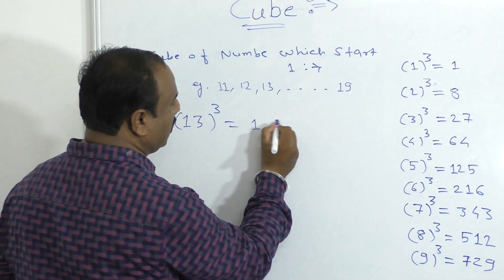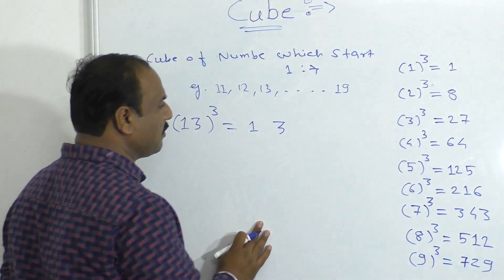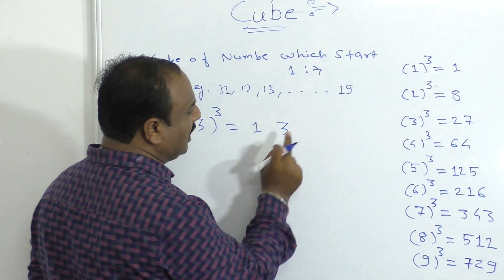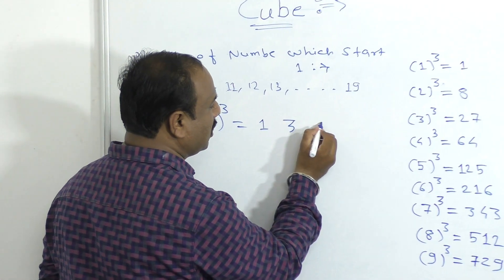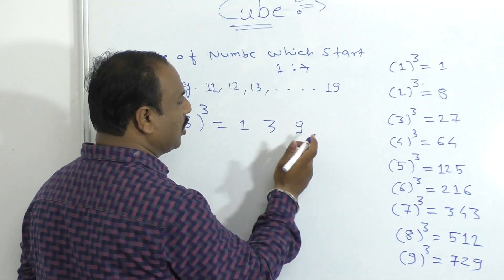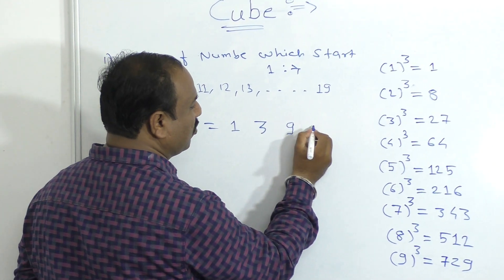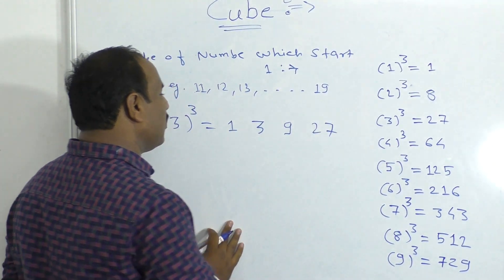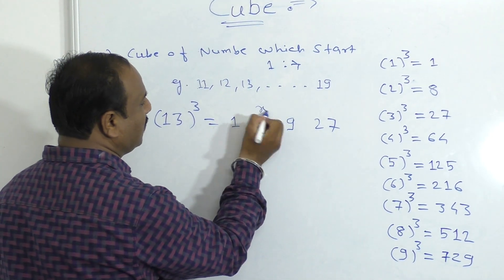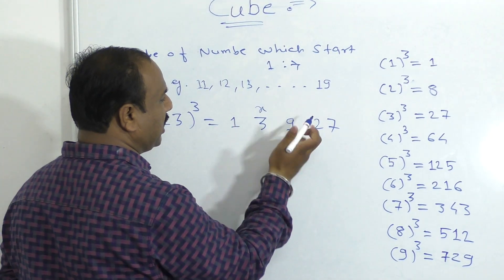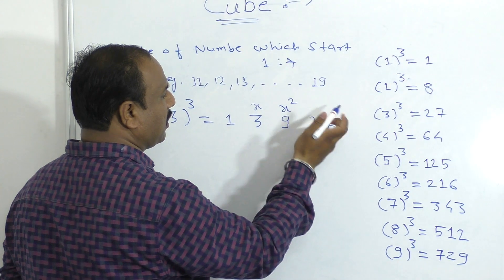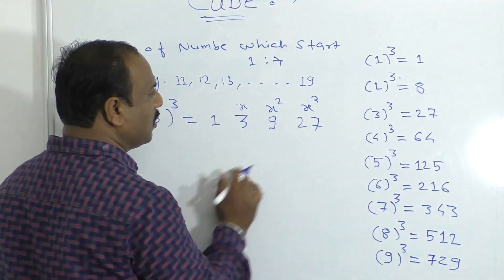Now, what do we do? We have to take the 3 square. The 3 square is 9. The 3 cube is 27. For example, we have to consider the 3 as X. What is 9? X squared. The X cube is X cubed.